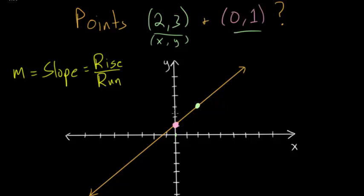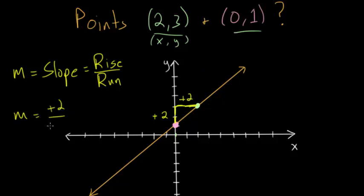To find this, we can just count: it looks like it goes up one, then two — so it goes up two units in the positive direction. Then going to the right, it looks like one unit and two units, so plus two to the right. So our slope m is our rise over our run: we go up two and we go over two, and two divided by two is simply one. So the slope of this line is equal to one.